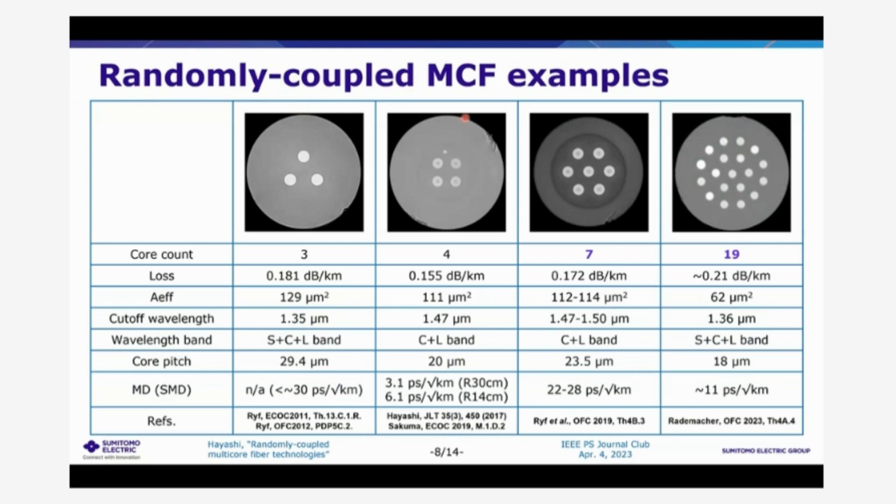On the other side, in the randomly coupled multicore fibers, the core count can be more scalable. So these are some examples of the randomly coupled multicore fibers. So this four core fiber was presented in the JLT paper. And we can see three, four, seven, and 19 core fibers. So these three, four, seven core fiber has an effective area more than 100 square microns.